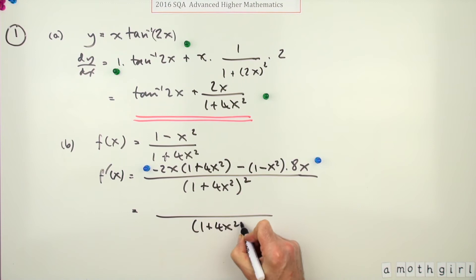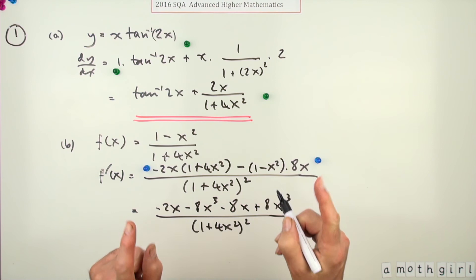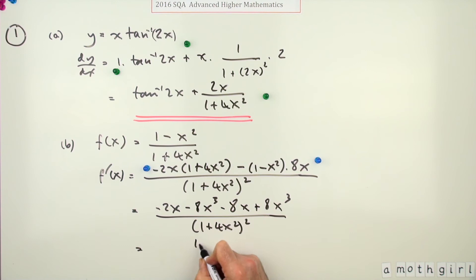And for the numerator, I know there's a common factor of x you could take out but it's probably not worth it here. Just multiply it out, so it's negative 2x and minus 8x cubed minus 8x and then minus minuses plus 8x cubed.